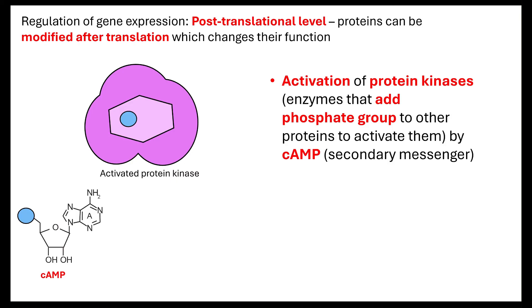For example, if we were talking about adrenaline: adrenaline binds to the receptor, which activates the production of cyclic AMP. Cyclic AMP then activates the protein kinase. The protein kinase will then activate enzymes so that glycogen will be hydrolyzed down into glucose molecules so that we can release glucose, helping with the fight or flight response. It's important to understand the way enzymes are activated at this post-translational level.